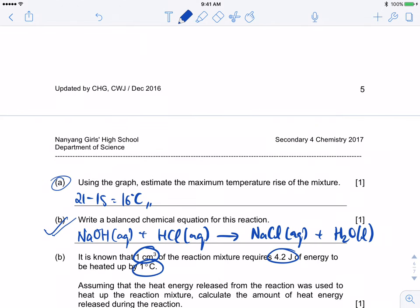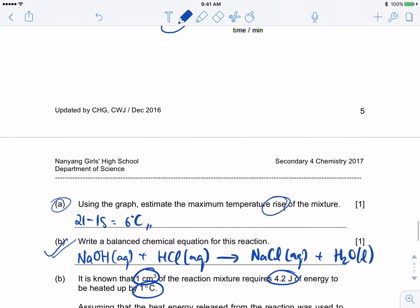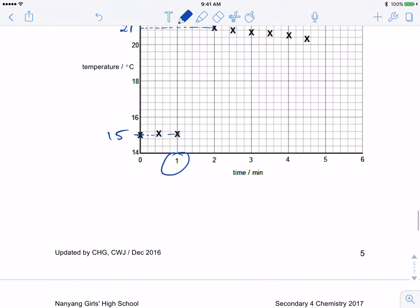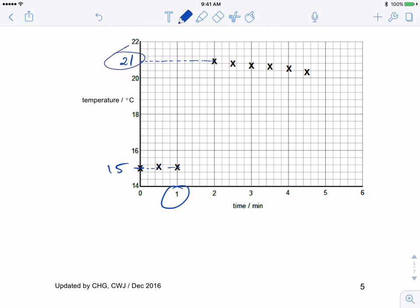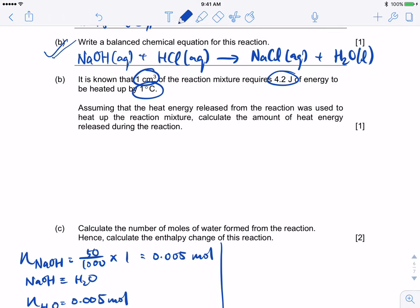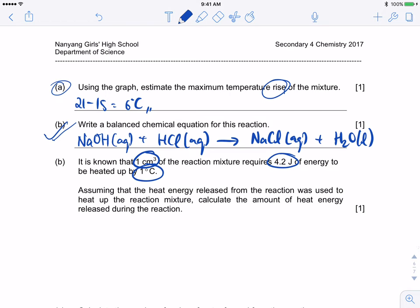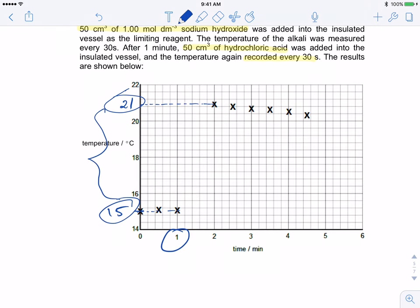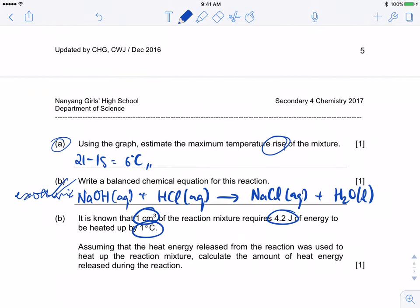Using the graph, estimate the maximum temperature change, temperature rise. They ask you for the temperature change, the rise in the temperature. Just take, it should be around 21 to 15. So it's around 6 degrees Celsius. This is the part where a lot of you don't know how to do. It is known that 1 cm³ of the reaction mixture requires 4.2 joules of energy to be heated up by 1 degree Celsius. Assume that the heat energy released from the reaction was used to heat up the reaction mixture. We are saying that this is an exothermic reaction. What causes this increase in temperature is the heat that's given off from this neutralization reaction.